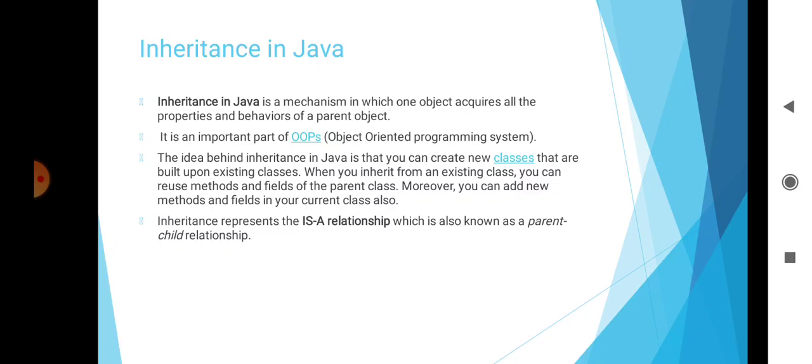The idea behind inheritance in Java is that you can create new classes built upon existing classes. When you inherit from an existing class, you can reuse methods and fields of the parent class. Moreover, you can add new methods and fields in your current class. Inheritance represents the IS-A relationship, also known as the parent-child relationship.